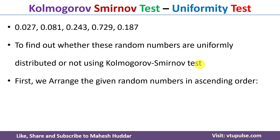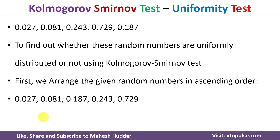First, we arrange the given random numbers in ascending order. So we get 0.027 as the first number, next 0.081, then 0.187, 0.243, and finally 0.729. Here n is equal to 5, which is the number of given random numbers.